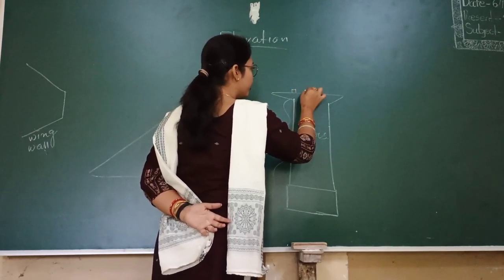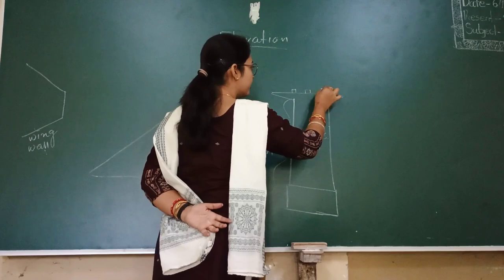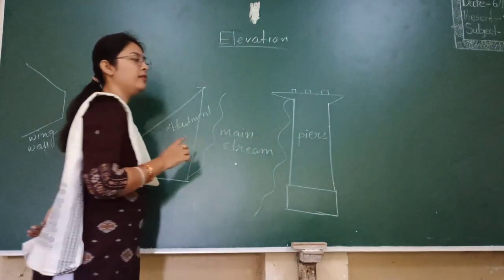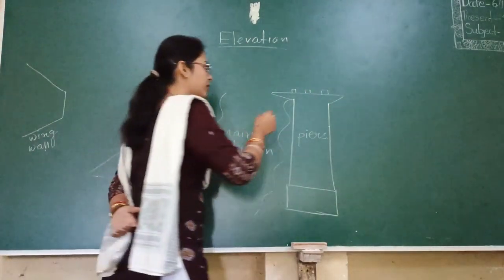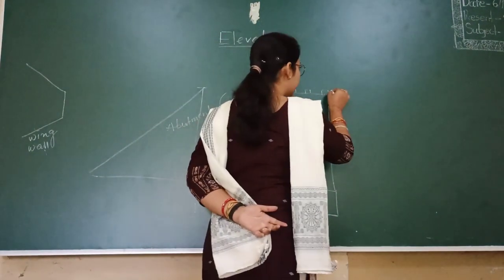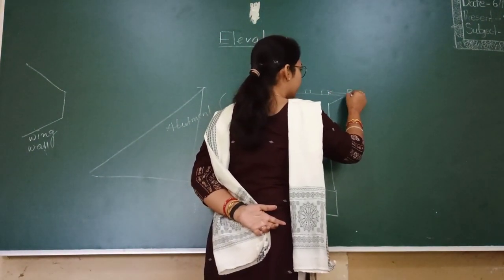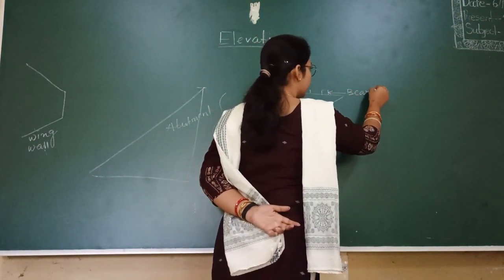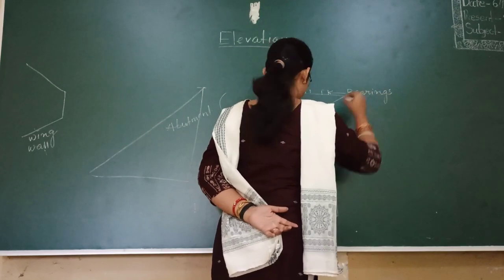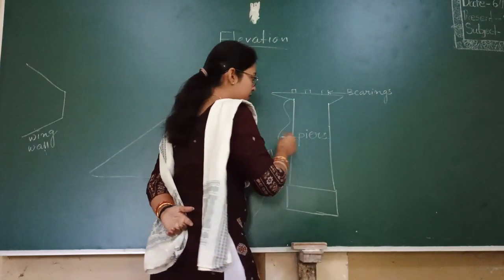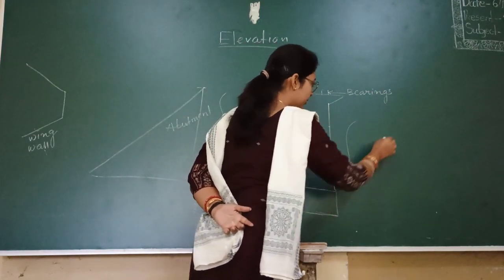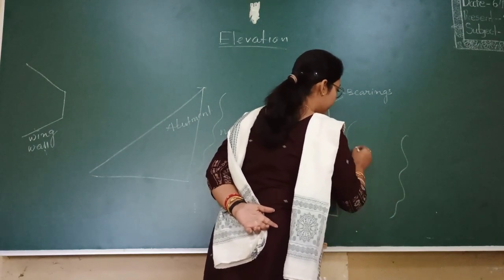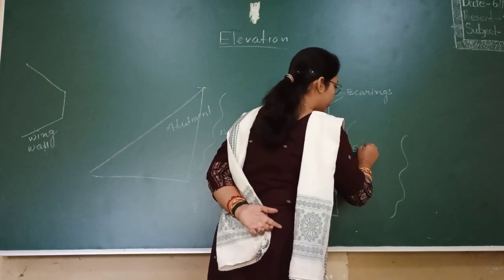We have bearings over here. This structure is the pier, and over the pier we have bearings. This is the main stream — you can say this water flow has small streams.